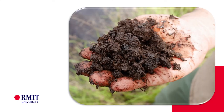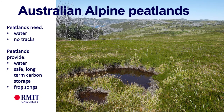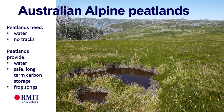I want to particularly introduce you to peat — this is a handful of extremely carbon-rich soil. Peatlands need water; they need to be wet. They are a type of wetland — a subset of wetland. To enable that balance between the carbon being fixed through photosynthesis and the carbon then being respired and returned to the atmosphere by microbial respiration, water hinders that breakdown of plant material. Peatlands need to stay wet to exist, and they also need not to have a lot of tracks, drains, roads, or physical disturbance through them.